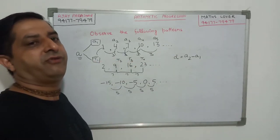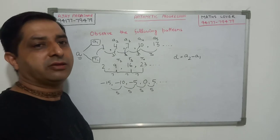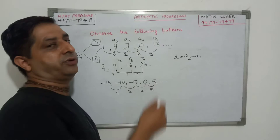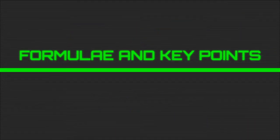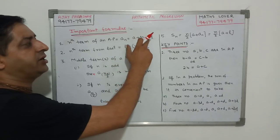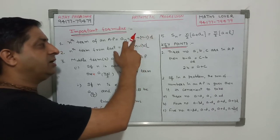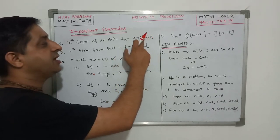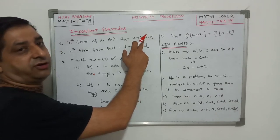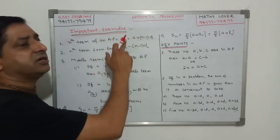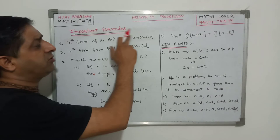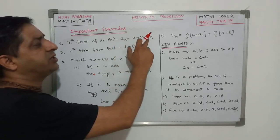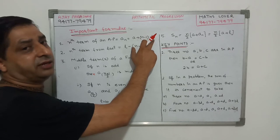Now we will see some important formulas and important key points also of chapter arithmetic progression. AP is equals to AN is equals to A plus N minus 1 into D. Here A represents the 1st term, D represents the common difference, N represents the number of term. Now we also call it general term or we also call it last term. We also call L is equals to A plus N minus 1 into D. Where L represents the last term.